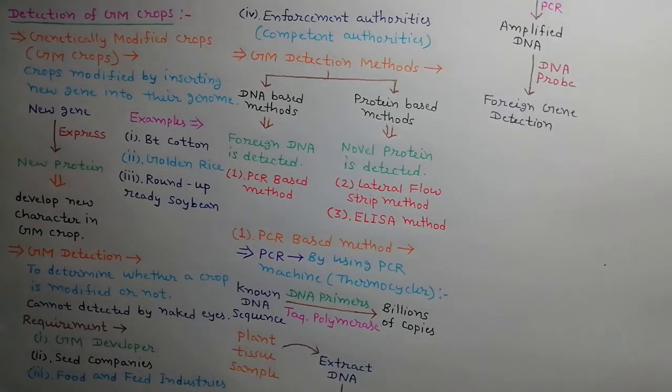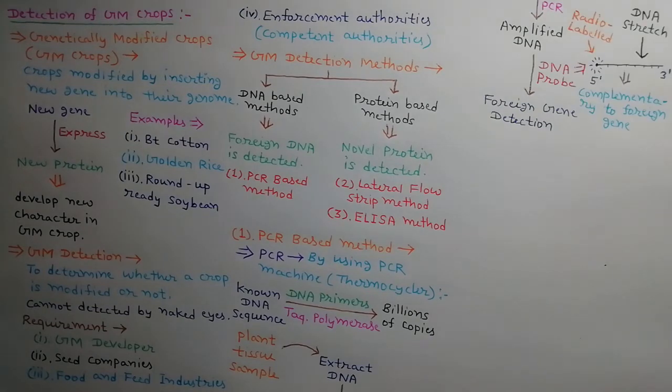For GM detection, DNA is extracted from plant tissue sample and is amplified using PCR technique. Now DNA probe is a 5' radio-labeled fragment of DNA which is complementary to the foreign gene in sequence. Now this DNA probe is detected by using Western blotting technique.